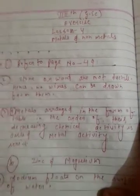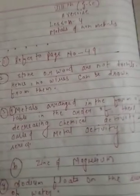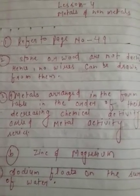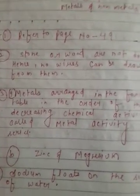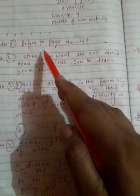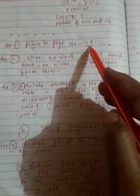The name of chapter 4 is Metals and Nonmetals. Question number 1: State 4 differences between metals and nonmetals. Answer 1: Refer to page number 49. You have to write five differences from there.